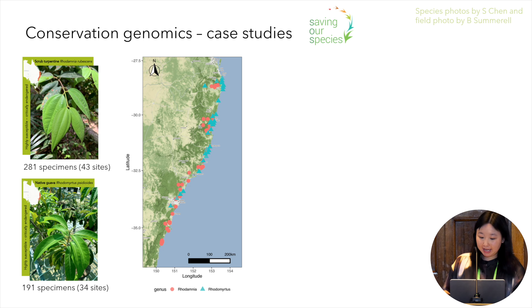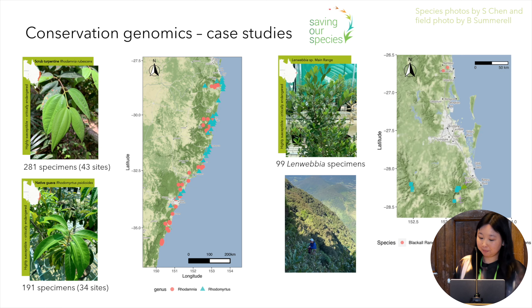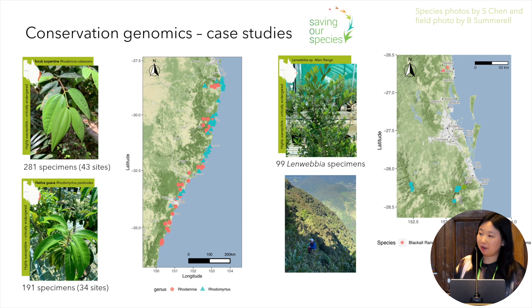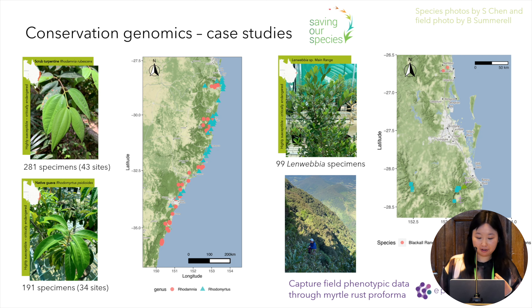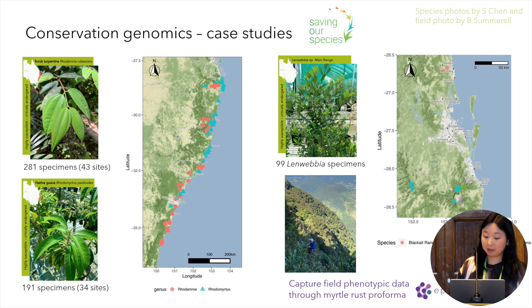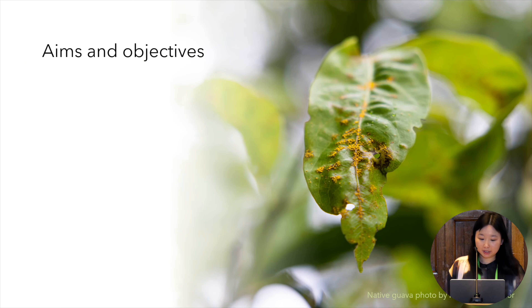The other species I'll talk about is Lenwebia species main range, which occurs in high-altitude cloud forest around the New South Wales-Queensland border. We included samples from related species, prominence and black owl range, and there were some putative hybrids identified in the field as well. Observations of rust infection were recorded using the myrtle rust assessment proforma, established as part of the New South Wales SOS myrtle rust emergency response project.